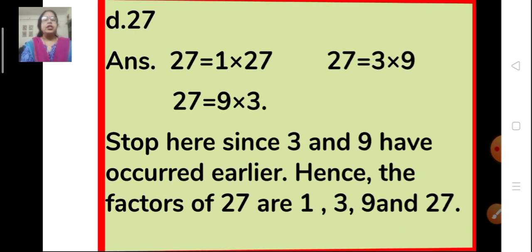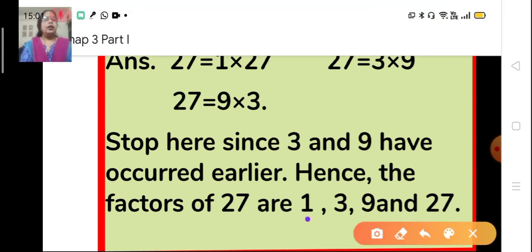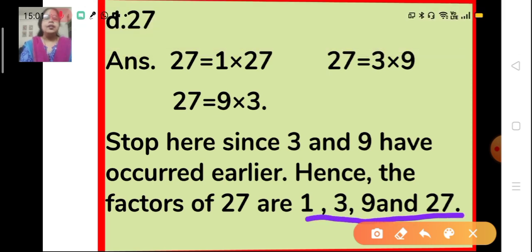Next question, (d) is 27 — find the factors of 27. So 27 is equal to 1 multiplied by 27, also equal to 3 multiplied by 9, and 9 multiplied by 3. We stop here because 3 and 9 were taken earlier. So what are the factors of 27? They are 1, 3, 9 and 27.